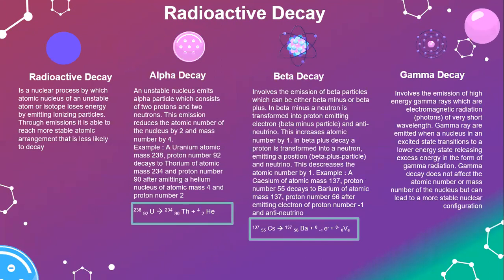Let's look into radioactive decay. It is a nuclear process by which an atomic nucleus of an unstable atom or isotope loses energy by emitting ionizing particles. Through emission, it is able to reach a more stable atomic arrangement that is less likely to decay.